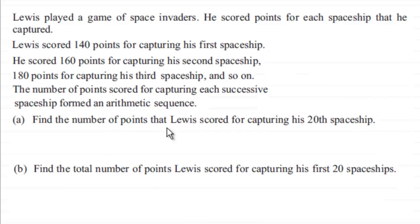In the first part, we've got to find the number of points that Lewis scored for capturing his 20th spaceship. What we've got is that for his first spaceship he scored 140 points, second spaceship 160 points, third one 180 points, and so on.